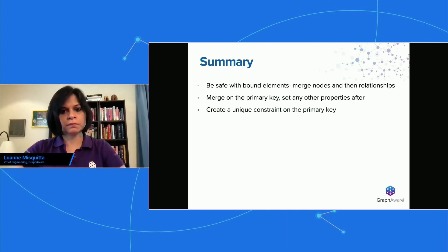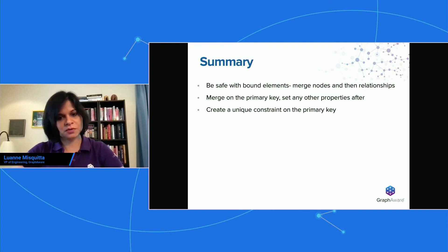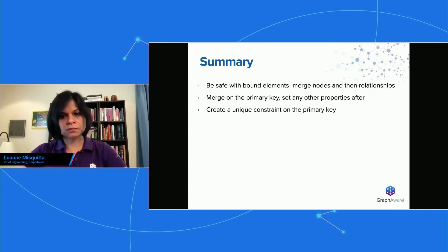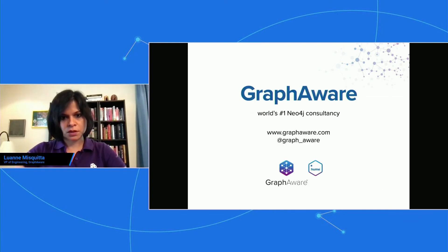So to summarize: be safe with bound elements — there's nothing to gain from writing long complicated patterns to merge in. Merge nodes first, then relationships, and you will be really happy with that. Merge always on the primary key; any other properties can be set after. And of course, create a unique constraint on the primary key. You really cannot go wrong with Merge if you understand this. Thank you.